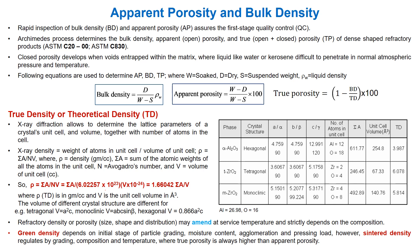Rapid inspection of bulk density and apparent porosity assures the first stage of quality control. Characterization should follow standard protocols; results include apparent porosity (AP), bulk density (BD), true porosity, and theoretical density. The theoretical density (true density) can be obtained from XRD data. Some representative equations, formulas, and methods are described.